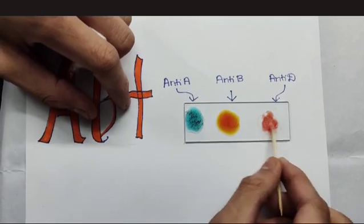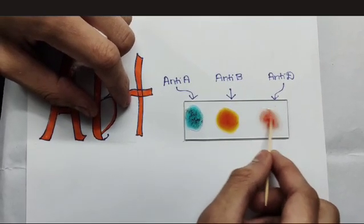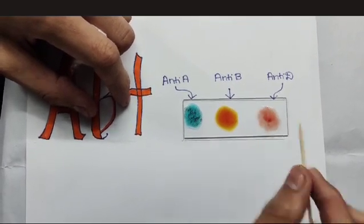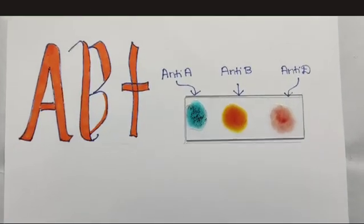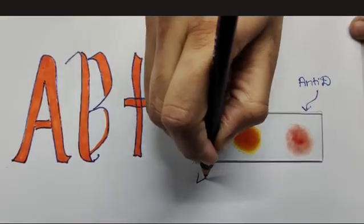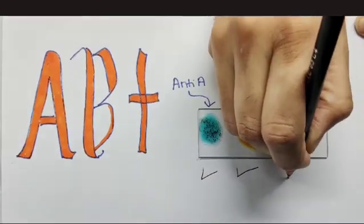Clotting is also seen in anti-D, which means Rh antigen is also present. It is a positive blood group. Hence, the overall blood group is AB positive.